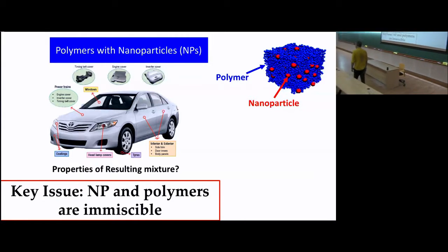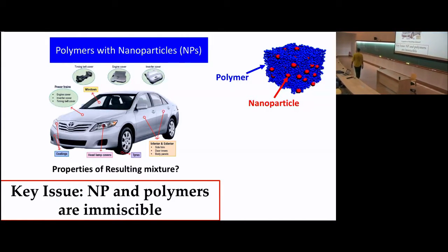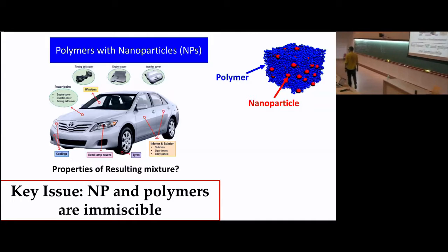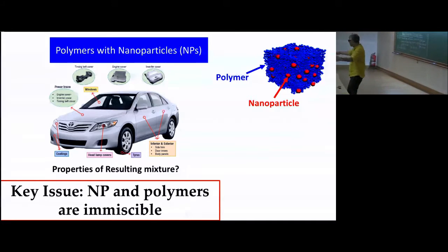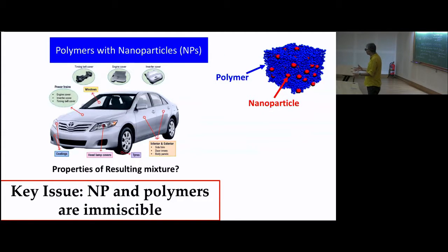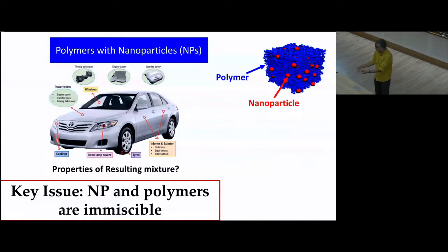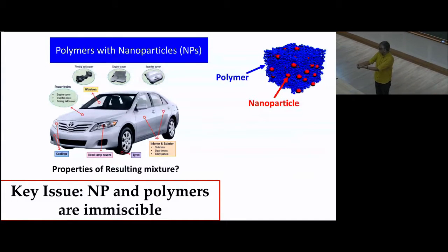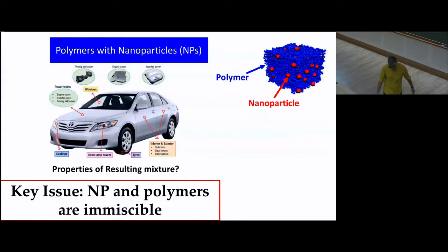Michelin takes the particles, throws them in with polymer, mixes the crap out of it, and then cross-links the rubber by vulcanization. The vulcanization fixes the particles — they hate each other, but they're married to each other and then it's done. So the compatibility between polymer and particle is what's stopping people from making better composites.